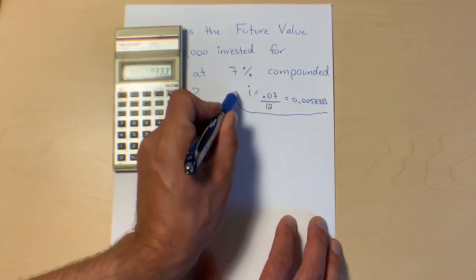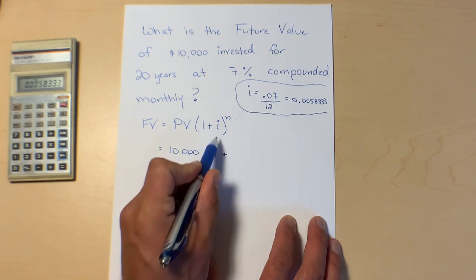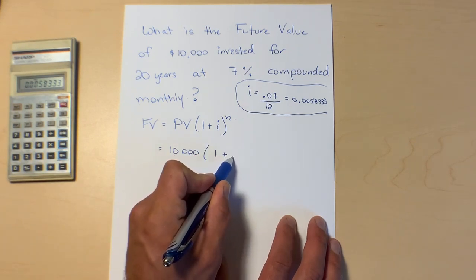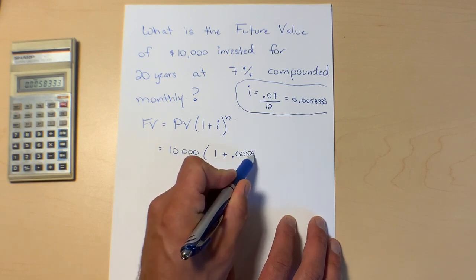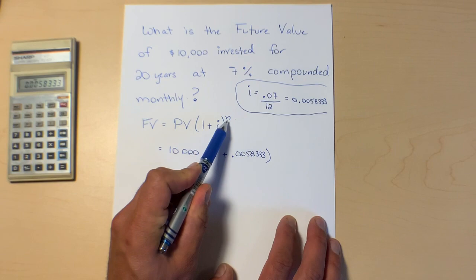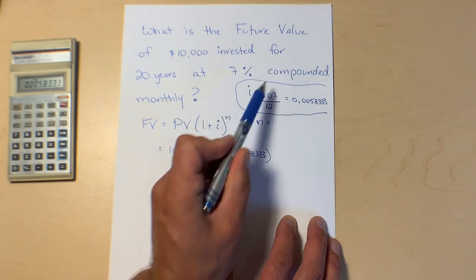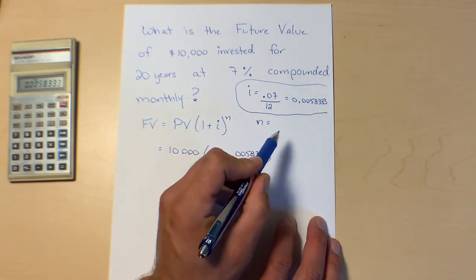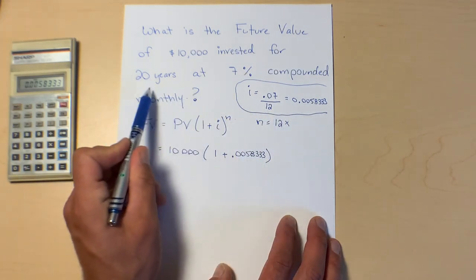So you want every single digit here, I know it's a pain in the neck but we've got to write them down. Where can I put this so you can see it? So my i is 0.0058333. I'm just kind of keeping that separate from the rest of the equation. So in our equation, i is 0.0058333 exponent n.